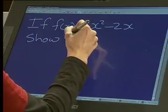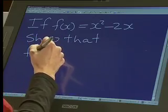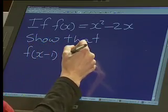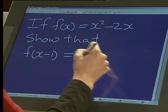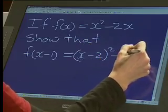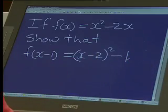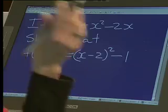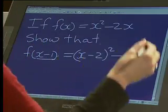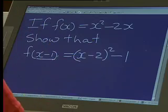Alright, so we're going to show that f(x-1) equals (x-2)² - 1. The question again: if f(x) = x² - 2x, show that f(x-1) = (x-2)² - 1. And they tell us in the question that we must show this by completing the square.